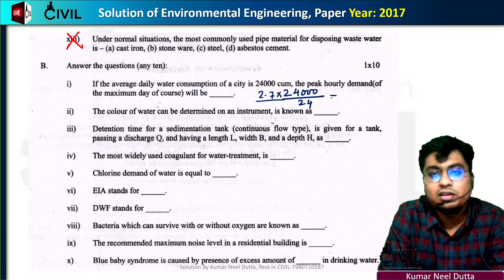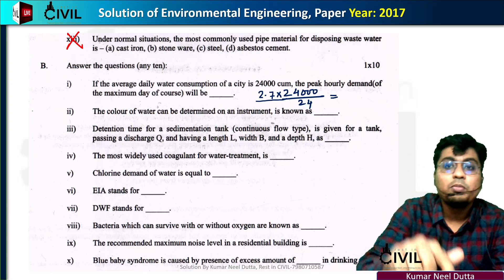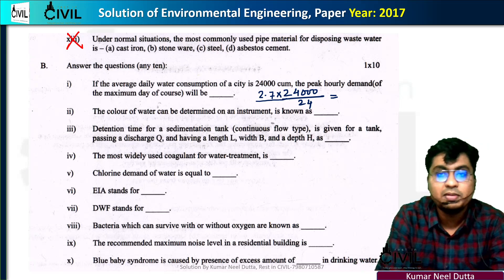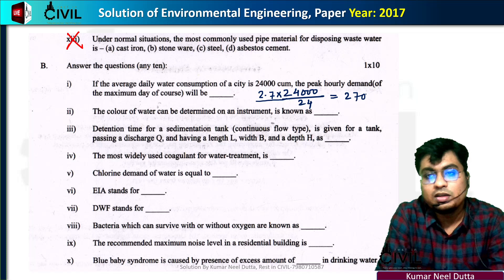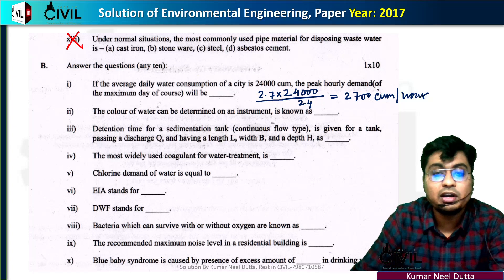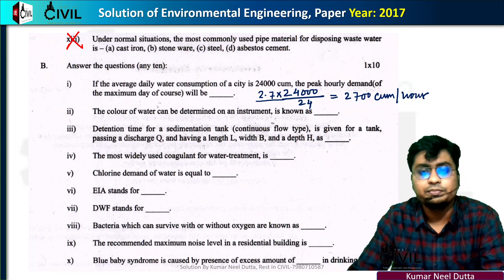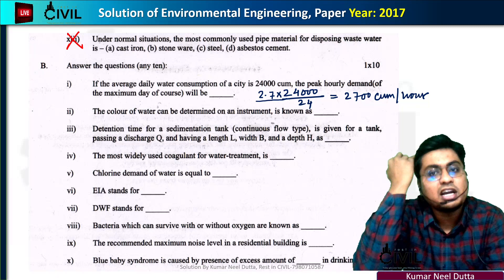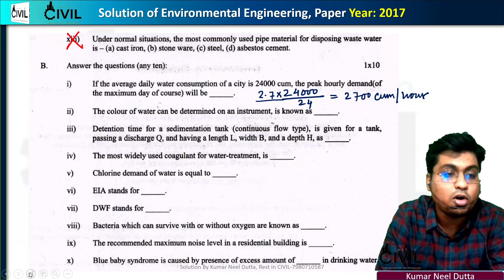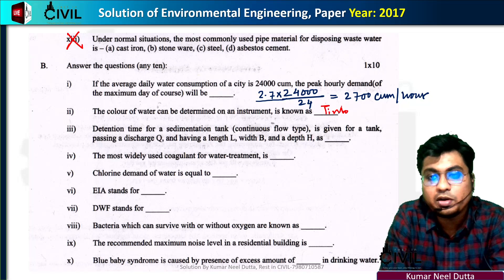The multiplying factors for water demand are: average daily demand factor is around 1, maximum daily is approximately 1.8, and peak hourly demand factor is 2.7.